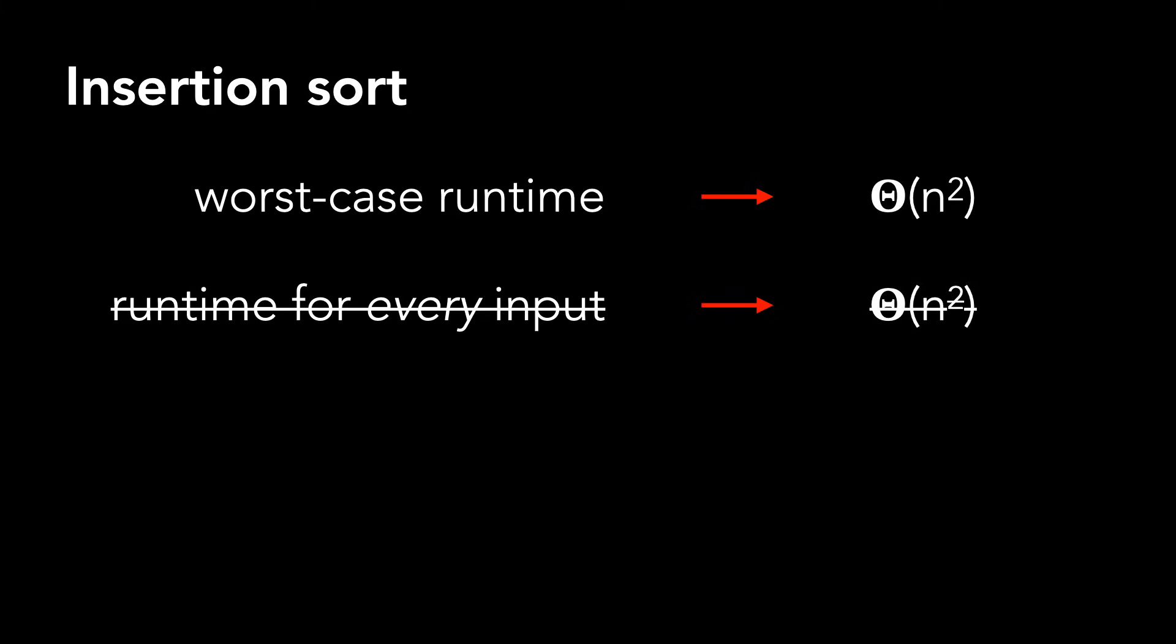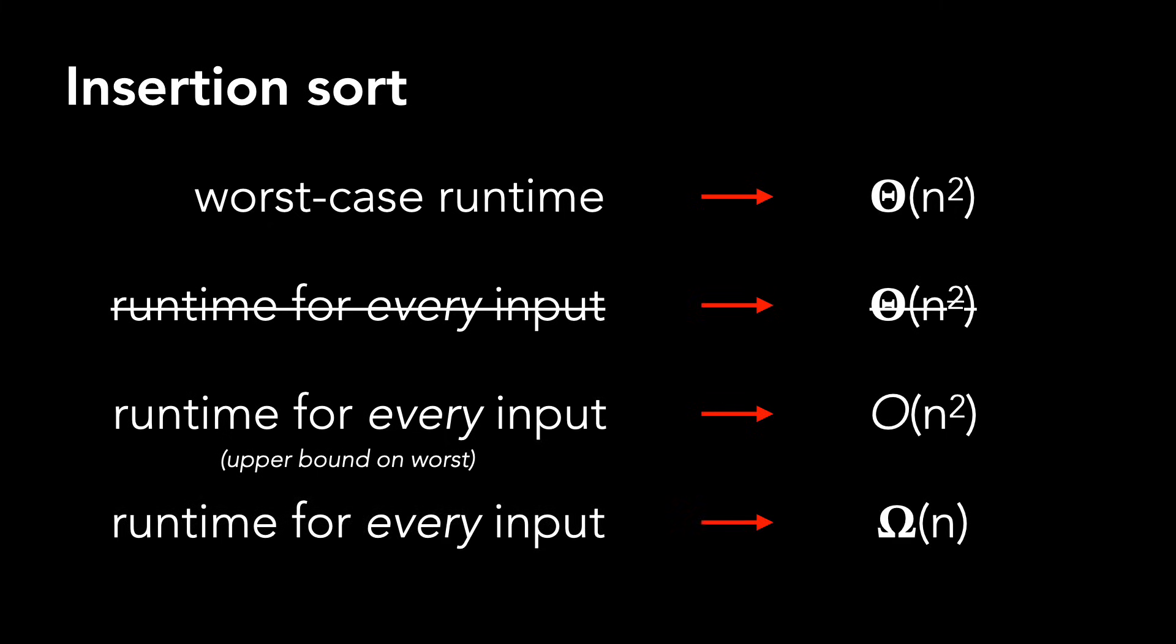We saw in the last video when the array is already sorted, its best case runtime was linear. It is, however, legitimate to say that the runtime with no modifiers or for every input of insertion sort is O(n²) since there is only an upper bound. And you can also say the runtime of insertion sort is Ω(n) since omega is only a lower bound.